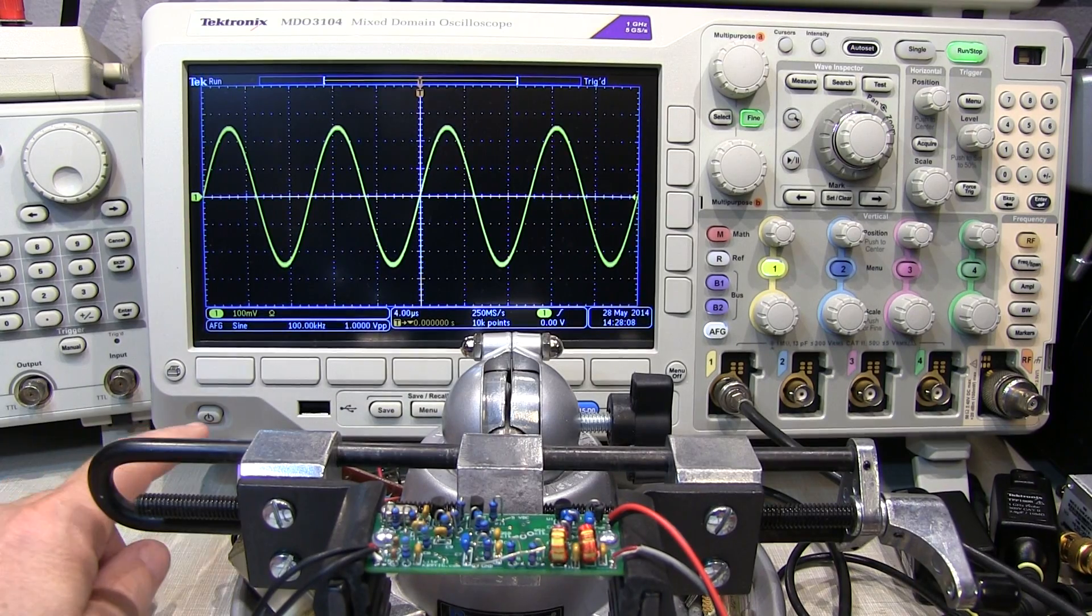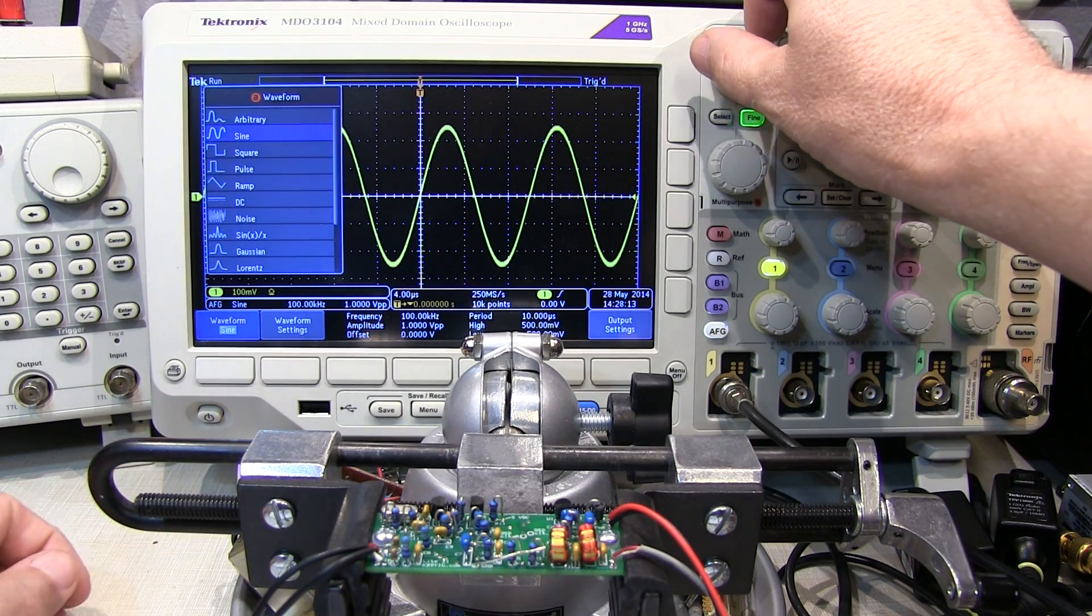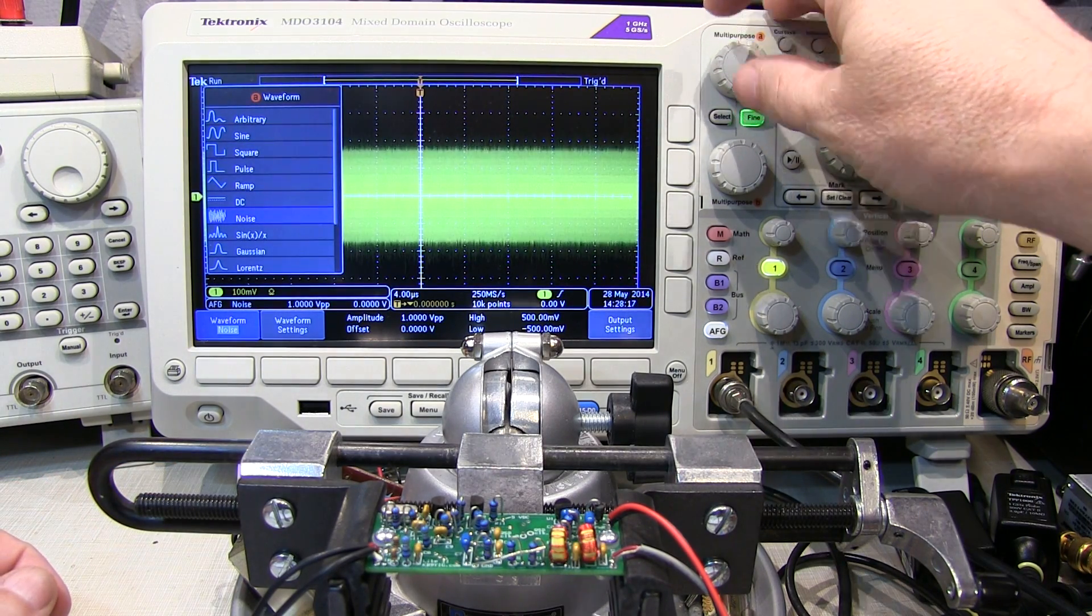So rather than use a sine wave for my test source, I'm going to use a noise waveform. And the noise waveform is nice because it's going to have a nice flat noise power over the entire frequency range of interest.